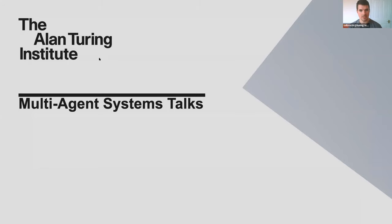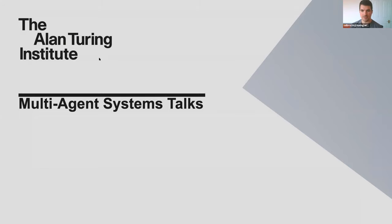Welcome everyone to today's talk in the multi-agent systems talk series organized by the multi-agent systems special interest group at the Alan Turing Institute. I'll give a brief introduction into what the group is and then hand over to the speaker. My name is Stefano Albrecht, I'm a lecturer at the University of Edinburgh and I organize these meetings jointly with Michael Wooldridge at Oxford University.